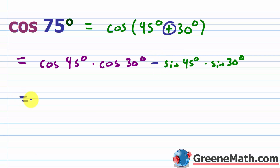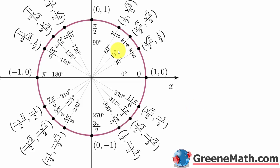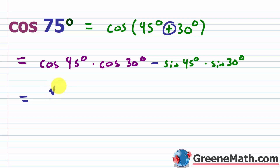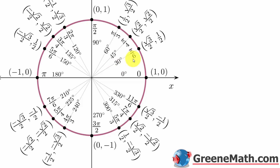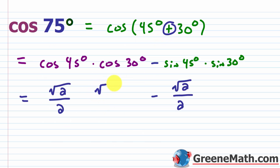Now replace these with actual values. From the unit circle, at 45 degrees or pi over 4, the cosine is square root of 2 over 2 and the sine is square root of 2 over 2. For 30 degrees or pi over 6, the cosine is square root of 3 over 2 and the sine is one half.